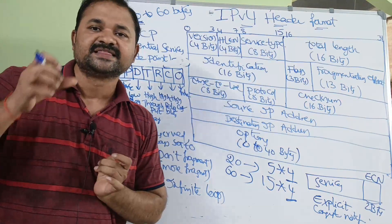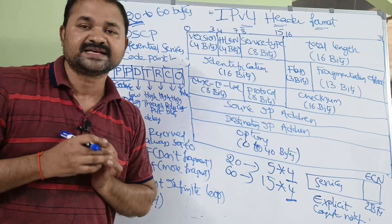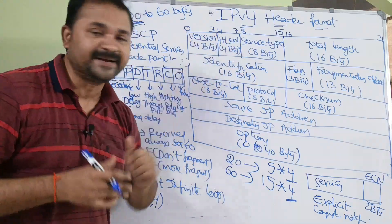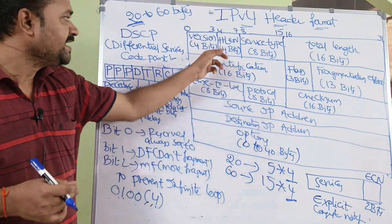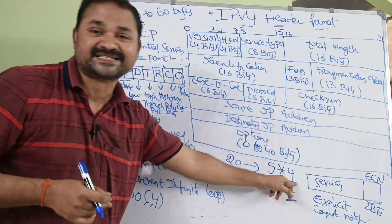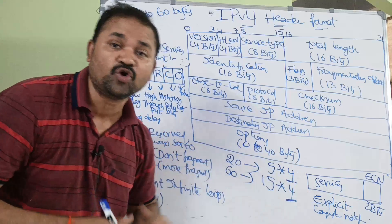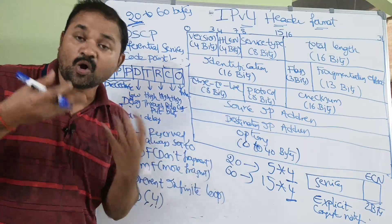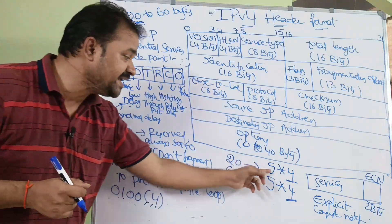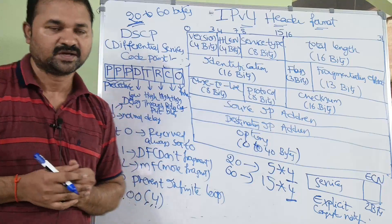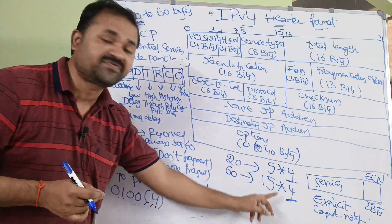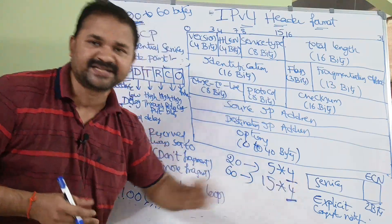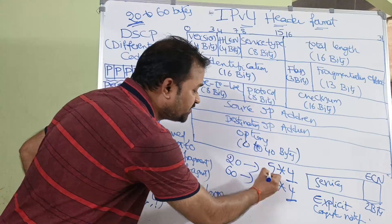HLAN specifies the size of the header length. The header length field size is 4 bits. Here each bit represents 4 bytes. So the minimum size of the header length — we know the minimum size of the IP header is 20 bytes. 20 equals 5 into 4. How we can write 60? 60 equals 15 into 4. So each unit is represented with the help of 4 bytes.